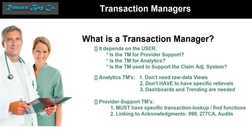If your transaction manager is for analytics, you're going to have upper-level management that needs to know what is really happening with the success and failure of these transactions. They'll look at healthcare claims, 277 CAs — there's a real serious problem with not being able to find the 999s because they don't link as well, partly because of how the 999 is built. An analytics transaction manager deals a lot with dashboards and trending, because managers need to know how the payer is doing this week. They don't necessarily need to look at the raw data.